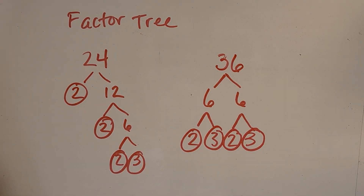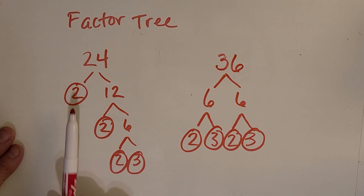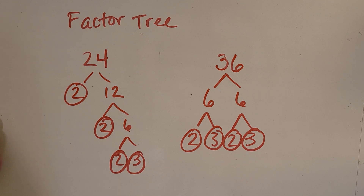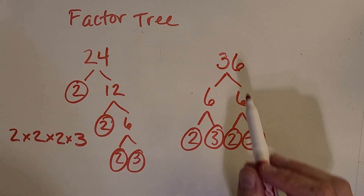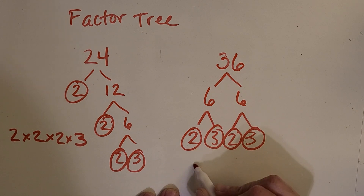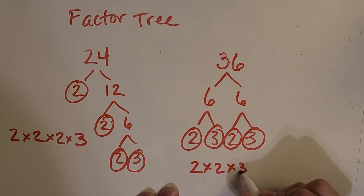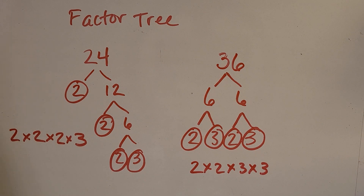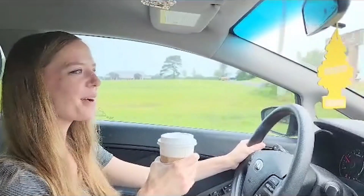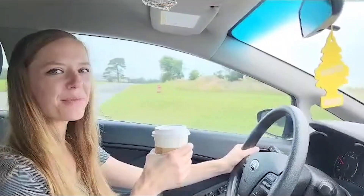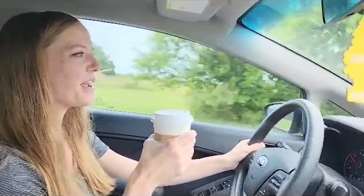Let's check your work. With 24, I'm seeing two times two times two times three. And with 36, I'm seeing two times two times three times three. Great work! I hope this video helps you in your math class or at home. See you next time.